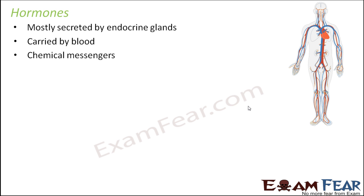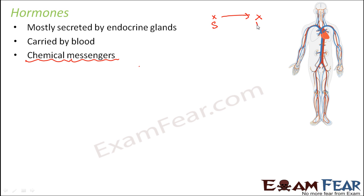Hormones are also known as chemical messengers. Messengers means somebody who carries a message from one part to another. These hormones are chemical messengers because they are going to carry the information from one part of the body to another — from the source to the destination. That is how a hormone is the chemical messenger.